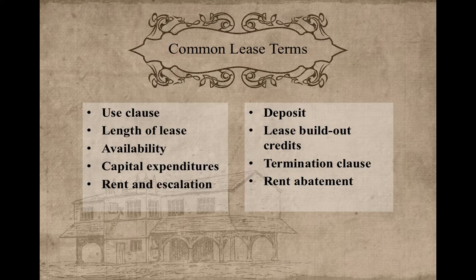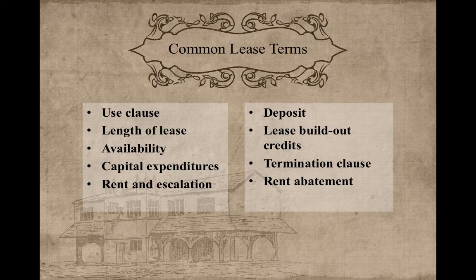Lease build-out credits give the tenant the ability to make leasehold improvements at the expense of the landlord. The termination clause allows the tenant or landlord to terminate the agreement under certain conditions. Rent abatement specifies that if the property is damaged, the tenant won't have to pay rent or will be allowed to pay reduced rent until the damage is fixed. If you plan on renting, make sure you negotiate favorable lease terms that you and the landlord can agree on.